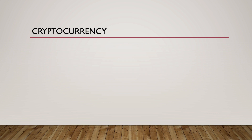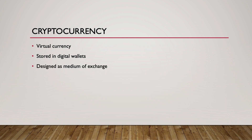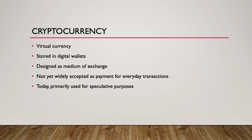In recent years, significant attention has been placed on cryptocurrency. Currently, cryptocurrencies like Bitcoin are stored in digital wallets, with the most secure wallets stored offline on hardware to prevent hacking. Designed as a medium of exchange, cryptocurrency is not yet widely accepted as payment for everyday transactions. Today, cryptocurrencies are used primarily for speculative purposes, as investors predict whether cryptocurrencies will be legitimized by governments and whether their use as a medium of exchange expands.